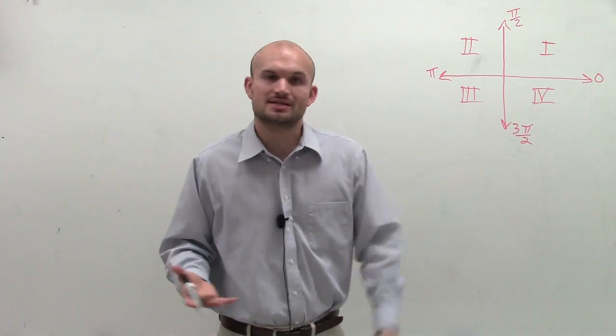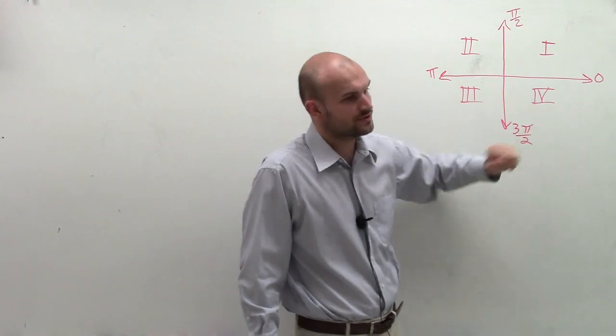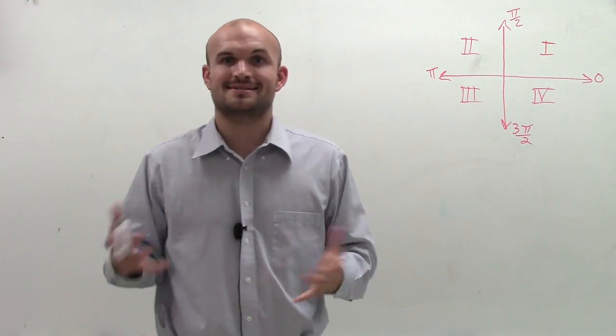So when we first learned about the Cartesian coordinate system, we learned this is quadrant one, quadrant two, quadrant three, and quadrant four. And usually that was with x and y-axes and so forth.